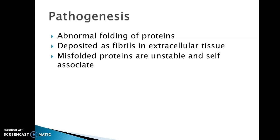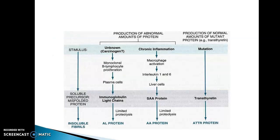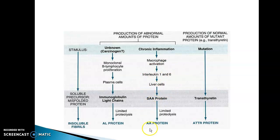The pathogenesis involves abnormal folding of proteins deposited as fibrils in extracellular tissue; misfolded proteins are unstable and self-associate. There may be a stimulus leading to monoclonal B-cell proliferation within plasma cells, causing immunoglobulin light chains to form AL protein. Alternatively, chronic inflammation with macrophage activation and interleukin 1 and 6 in the liver leads to SAA protein converting to AA protein deposits. There could also be a mutation of a normal protein to its mutated form, producing amyloid TTR.